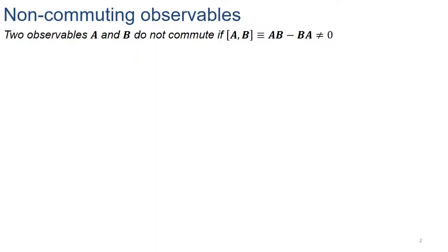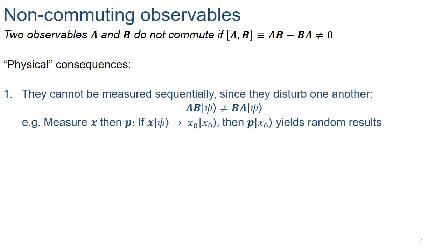The starting point for this work is non-commuting observables. Two observables A and B are said to be non-commuting if their commutator is non-zero. We can look at the physical consequences of two observables non-commuting. One consequence is that because they don't have simultaneous eigenstates, they cannot be measured sequentially, and that's because the measurement of one disturbs the measurement of the other.